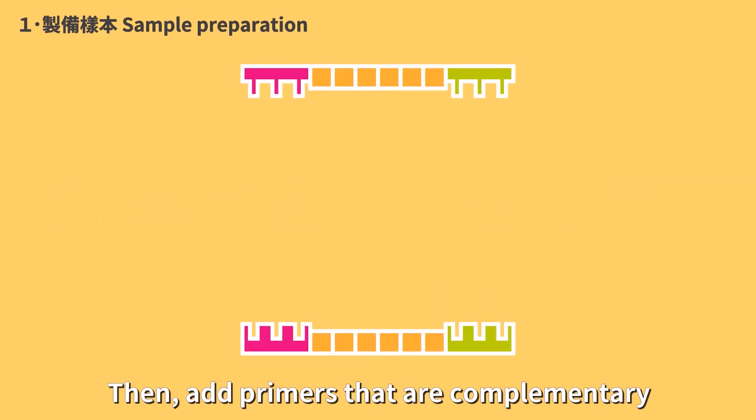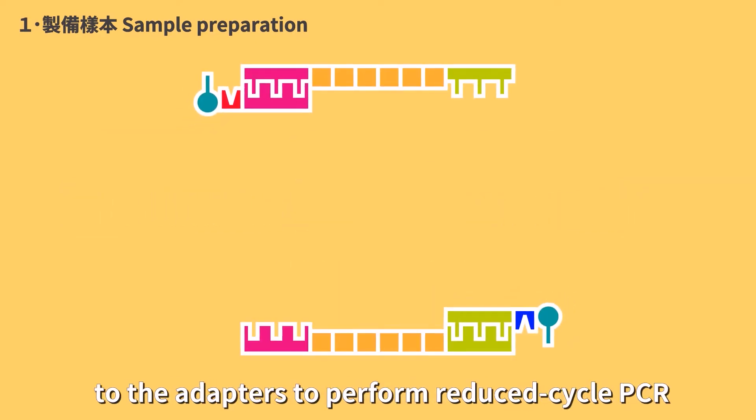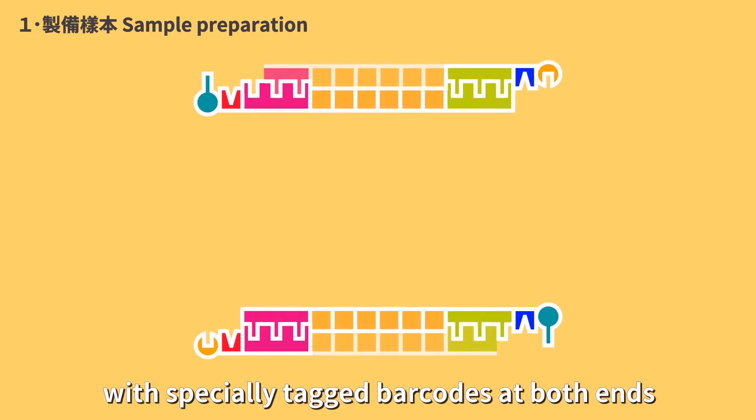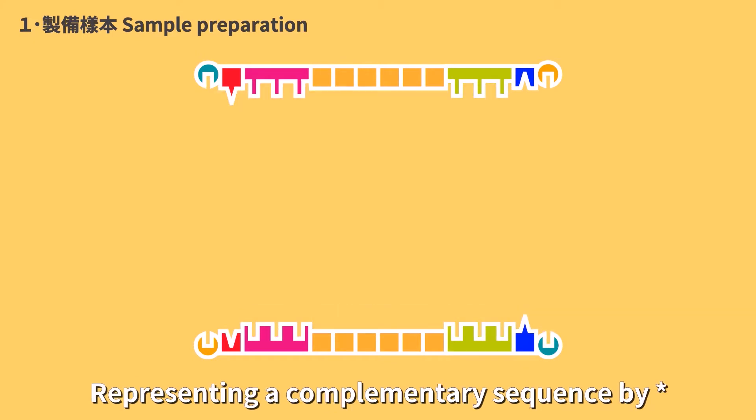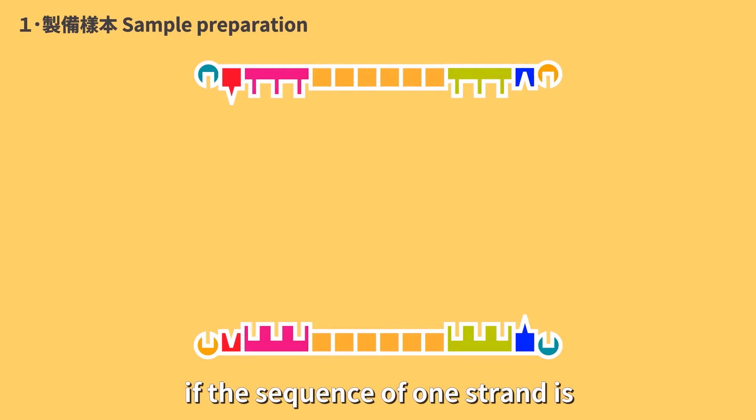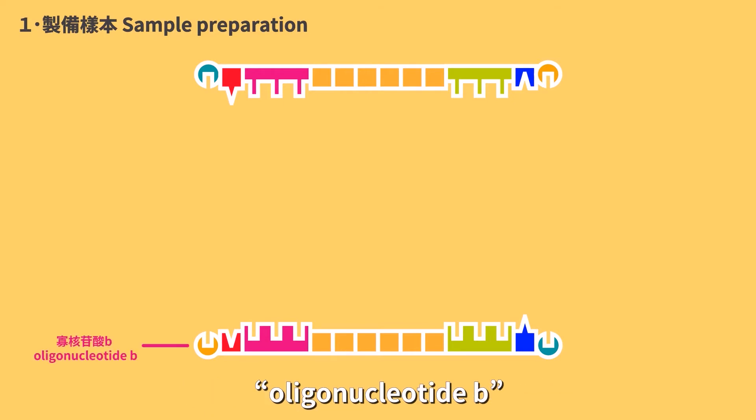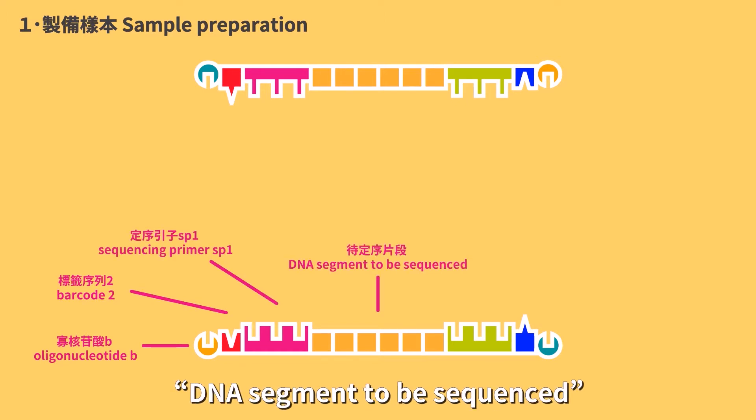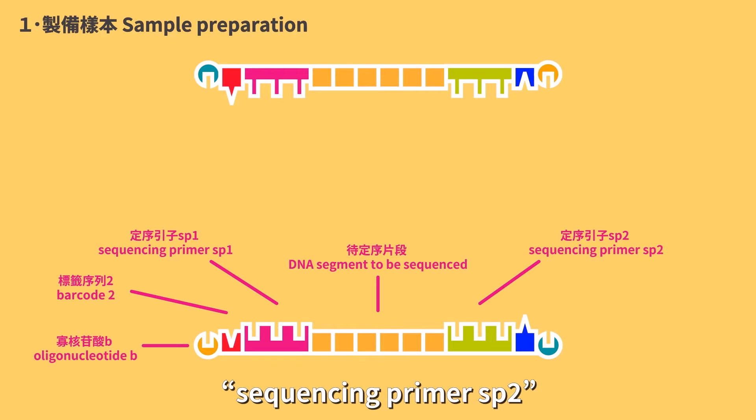Then, add primers that are complementary to the adapters to perform reduced cycle PCR to generate double-stranded segments with specially attached barcodes at both ends, representing a complementary sequence by star. If the sequence of one strand is: oligonucleotide B, barcode 2, sequencing primer SB1, DNA segment to be sequenced, sequencing primer SB2, barcode 1 star,